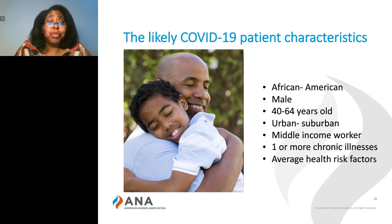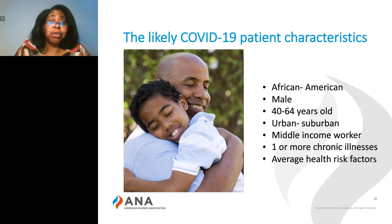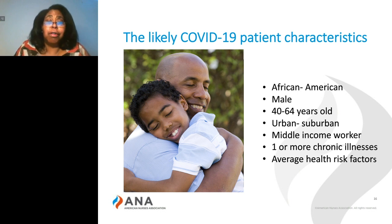So what does the likely COVID-19 patient look like? An African-American male between 40 and 64 years old, living in an urban or suburban setting, as a middle-income worker with one or more chronic illnesses, and average health risk factors overall.